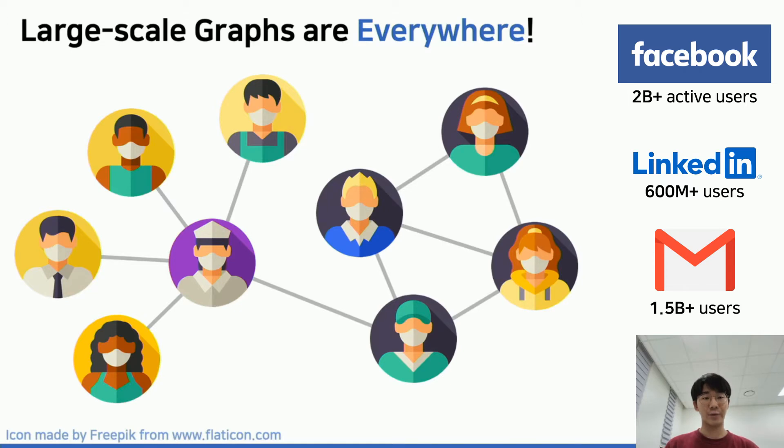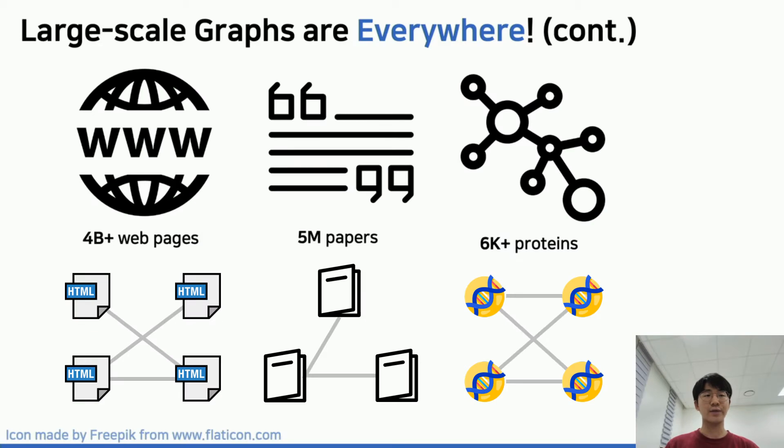Nodes are users and edges between two nodes exist if two users are friends. Even for an email network, a graph can represent who sent emails to whom. Graphs can be used across many domains such as WWW, citation networks, and protein-protein networks in biology.